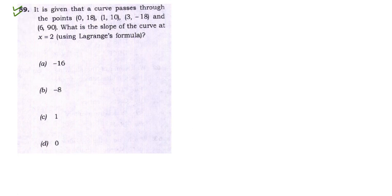Question 59 says: it is given that a curve passes through the points (0, 18), (1, 10), (3, -18), and (6, 90). These are the four points that the curve passes through. We need to find the slope of this curve at x = 2.